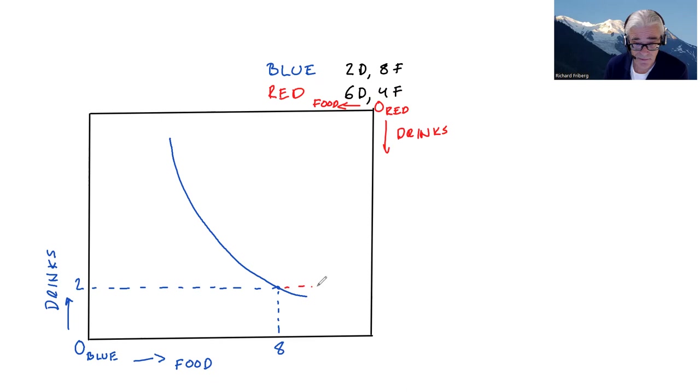Okay, so if Red has six drinks like this and four F, that's her initial allocation. We can, just as in the case of Blue, we can depict an indifference curve that passes through the initial endowment here. So this is indifference curve for Red.